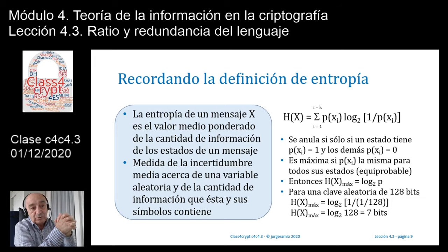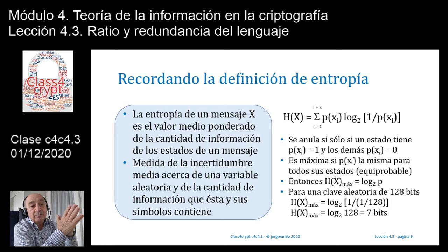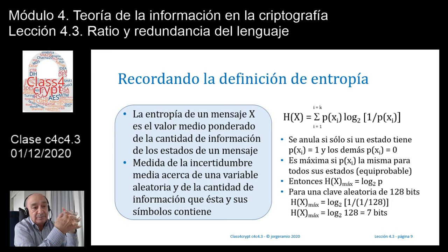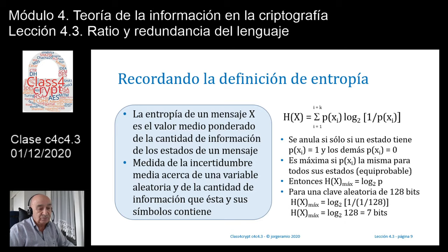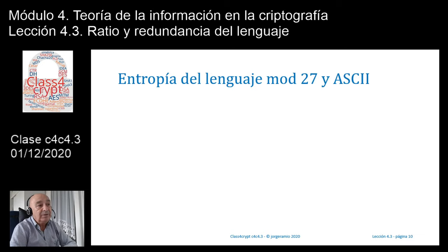Cuando la probabilidad es la misma para cada estado, ponemos solamente P, no P sub i. Para una clave aleatoria de 128 bits, que habitualmente utilizamos en el algoritmo AES —la clave más pequeña del algoritmo AES— la entropía sería logaritmo en base 2 de 128, que serían 7 bits, básicamente porque 2 elevado a 7 es igual a 128.